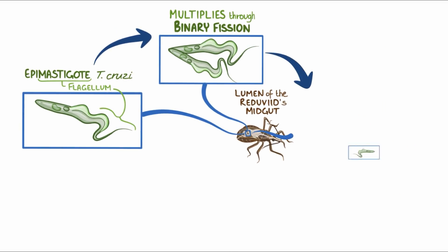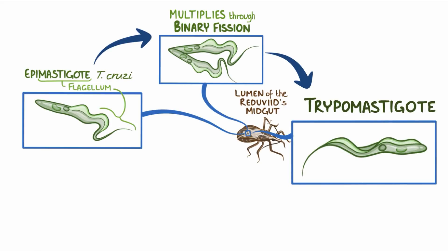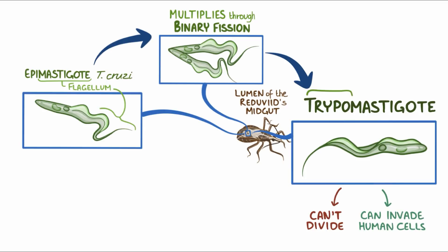Over time, the epimastigote transforms into a tripomastigote, and at that point it loses its ability to divide, but the tradeoff is that it gains the ability to invade human cells. In fact, tripо means to bore or punch into.